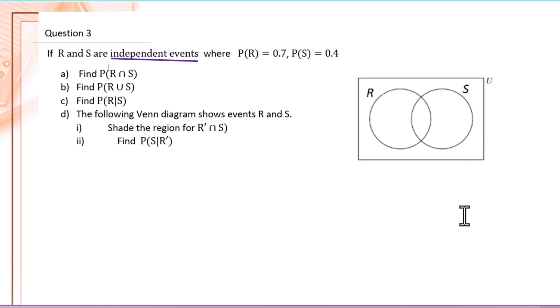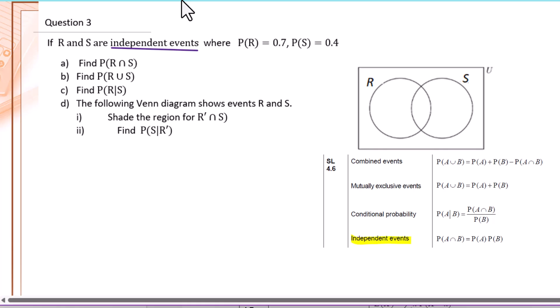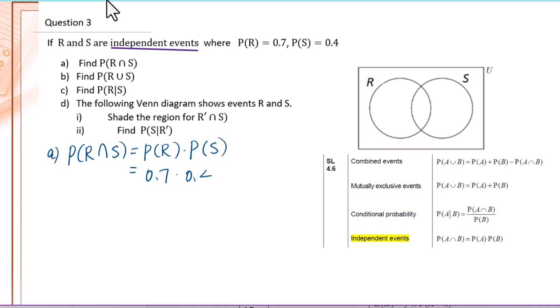Let's go to the formula booklet. For independent events, the probability of A intersection B equals the probability of A times the probability of B. Therefore, P(R intersection S) equals P(R) times P(S) equals 0.7 times 0.4 equals 0.28.